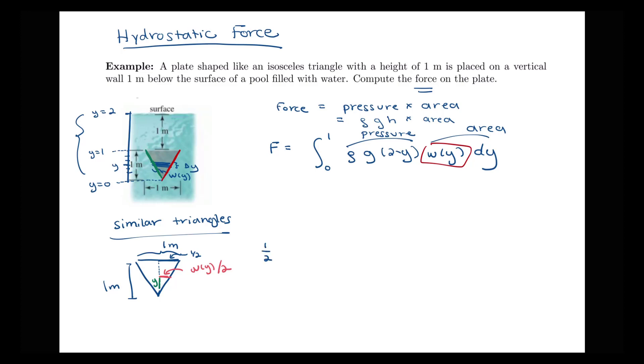So the proportion that I can set up: one half over one for the big triangle here is equal to w(y) over 2 divided by y. Okay, so then we can cross multiply here. So I have y over 2 is equal to w(y) over 2, which actually gives me that w(y) is equal to y in this particular example. So I see that my setup is going to be this integral from 0 to 1 of ρg times (2 minus y) times y dy, and then we'll be able to evaluate that.